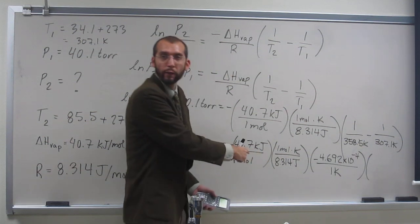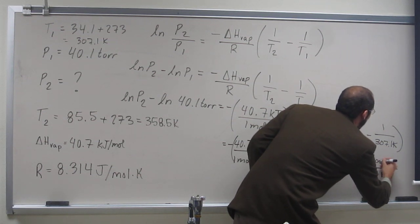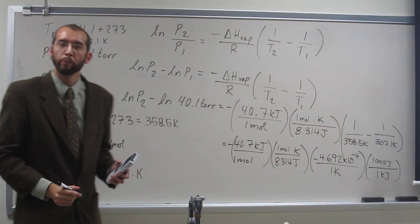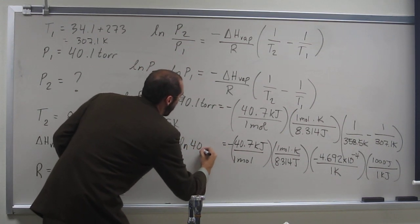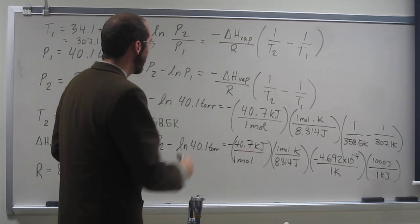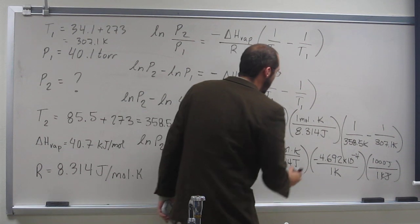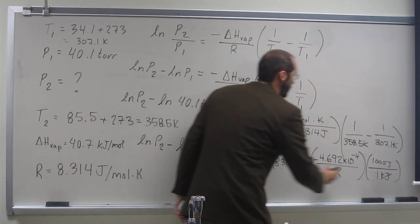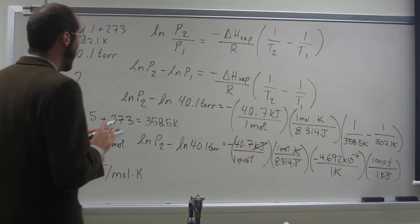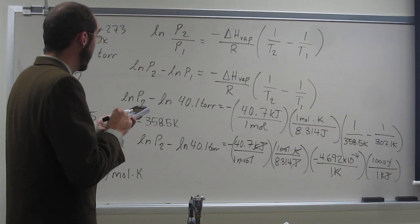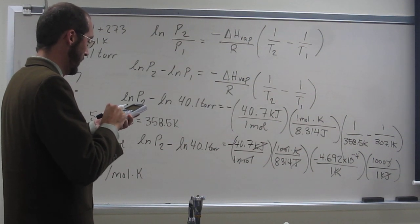So everybody okay with me doing that? And then what do we have to do? We've got to convert kilojoules and joules. One kilojoule equals 1,000 joules. So let's go ahead and cancel, so this again equals Ln P2 minus Ln 40.1. Let's go ahead and cancel our units: kilojoules cancels with kilojoules, moles cancels with moles, kelvin cancels with kelvin, and joules cancels with joules. So we don't have any of those units left.